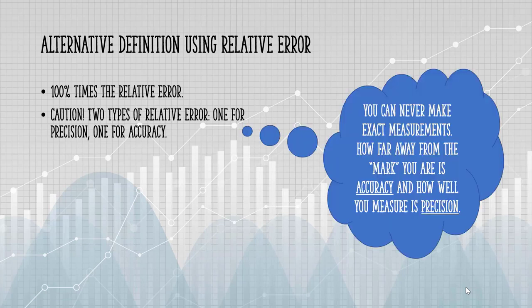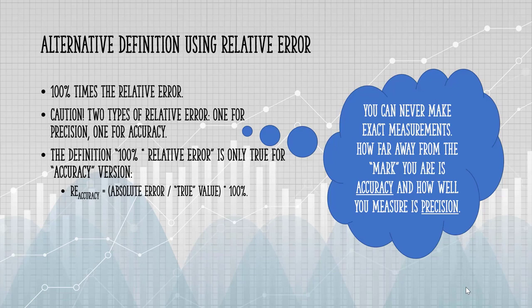The definition, 100 times the relative error, is only true if you are using the accuracy version of relative error.